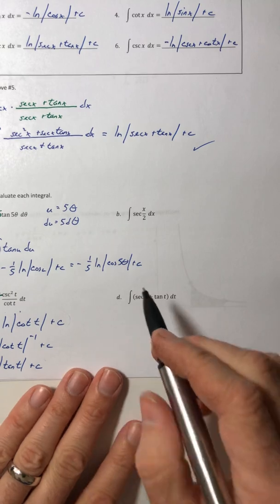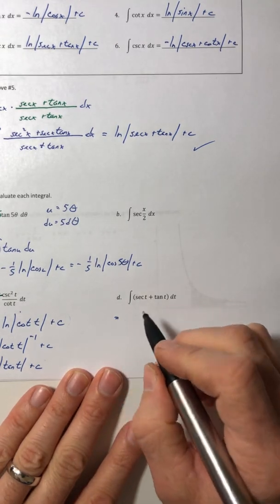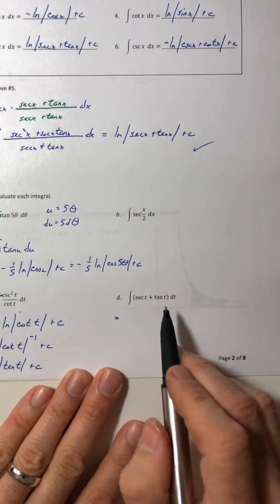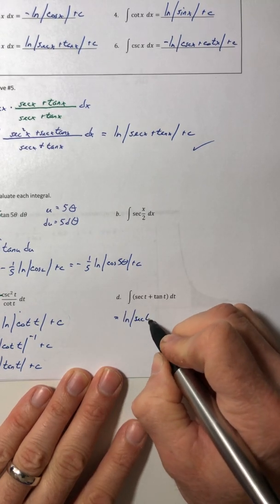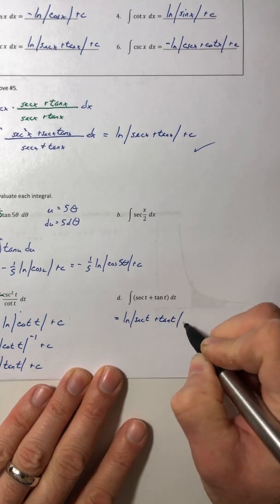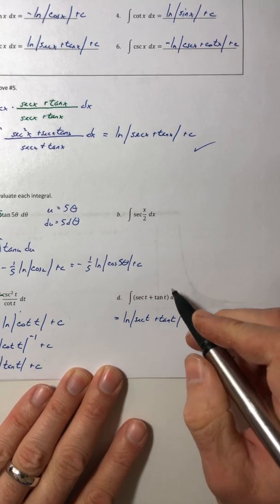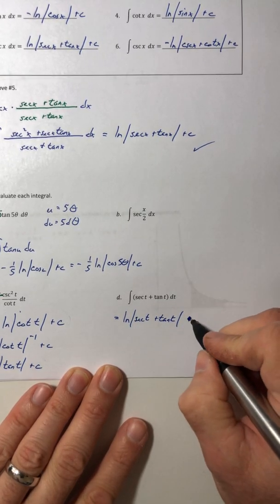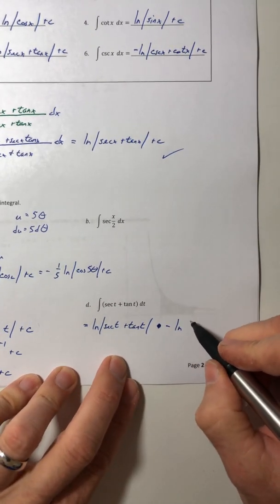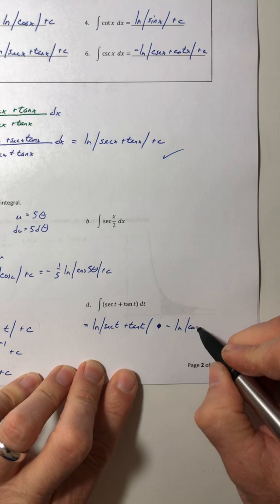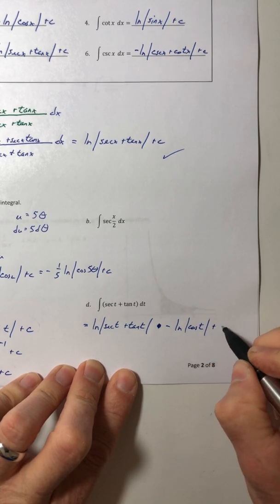All right, for d, this one is just a matter of integrating each term. So ln of secant t plus tangent t, and then plus the integral of tangent, so it'll actually be a minus, ln absolute value cosine of t plus c.